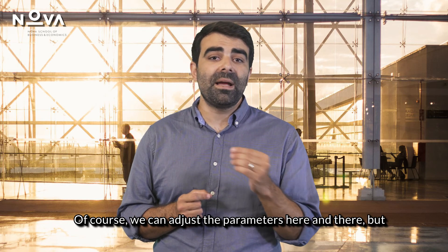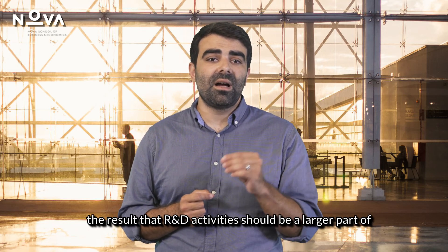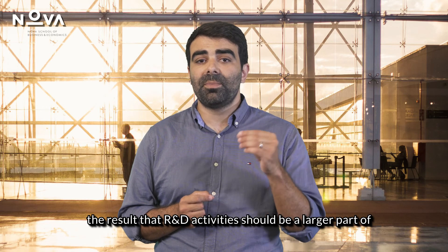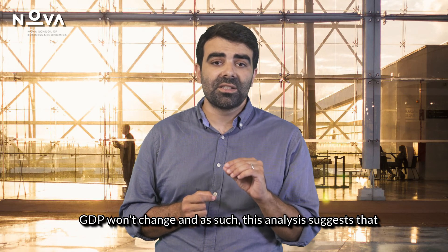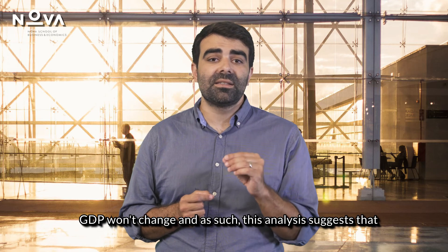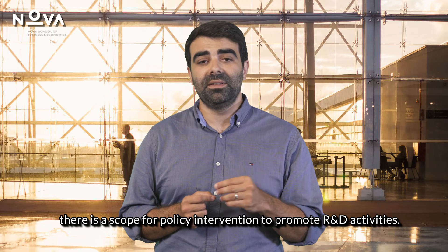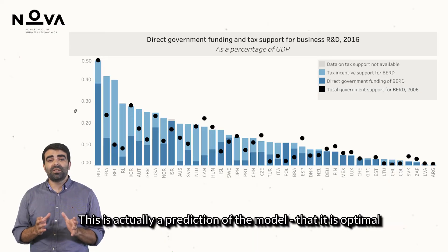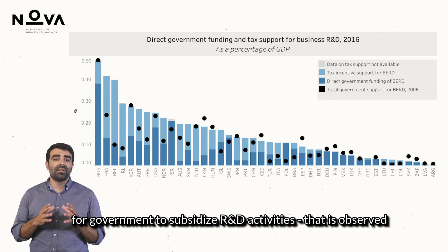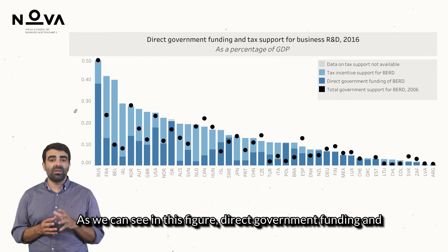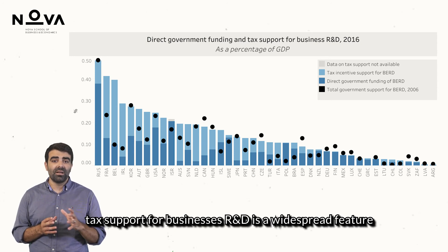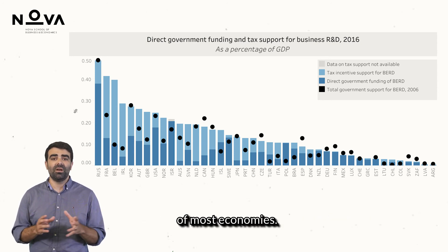Of course, we can adjust the parameters here and there, but the result that R&D activities should be a larger part of GDP won't change. As such, this analysis suggests that there is scope for policy intervention to promote R&D activities. This is actually a prediction of the model — that it is optimal for government to subsidize R&D activities. That is observed in reality: as we can see in this figure, direct government funding and tax support for businesses' R&D is a widespread feature of most economies.